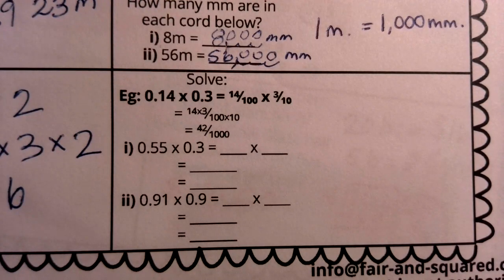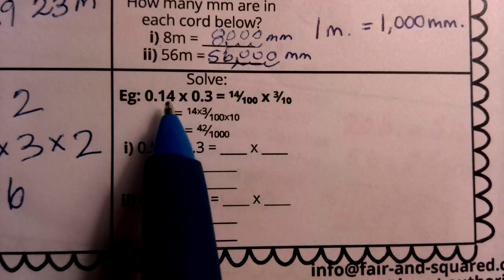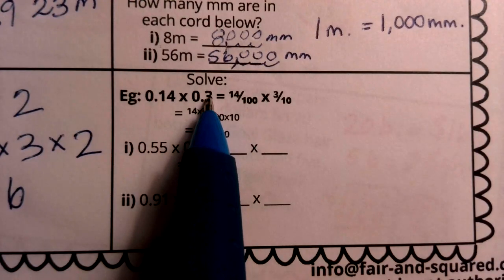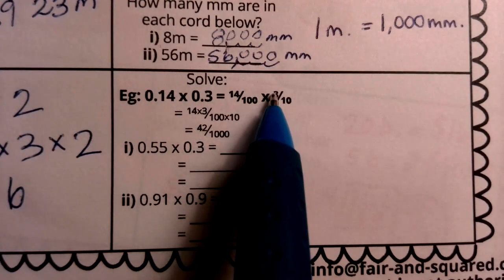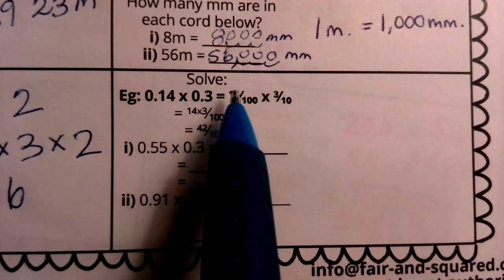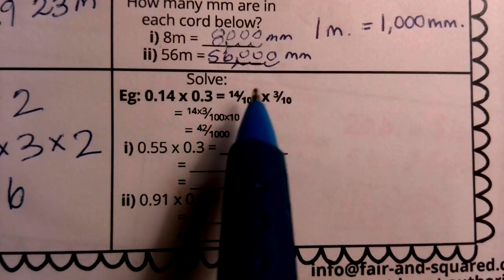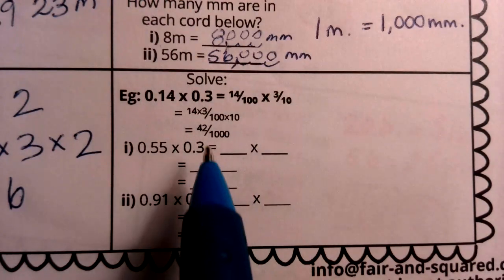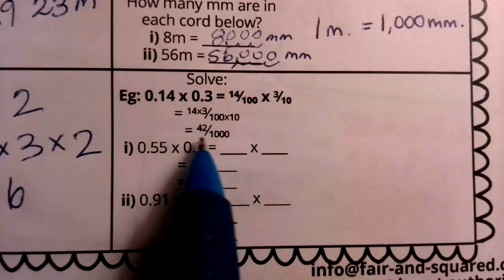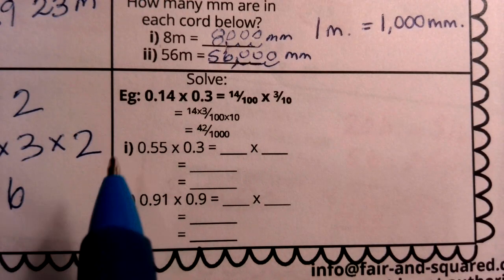And this one is requiring us to think with a strategy that you may or may not use as your go-to strategy, but it's good for our brains to take a look at someone else's problem-solving and think about that problem-solving and then apply it to question i and question ii. So in our example, we see 0.14, 14 hundredths times 0.3, three tenths. That's why this is recorded as 14 over 100, 3 over 10. Now, when I multiply 14 times 3, that's going to be my new numerator. When I multiply 100 times 10, that's going to be my new denominator. When I carry that out, I get 42 over 1,000.